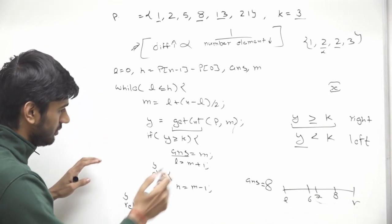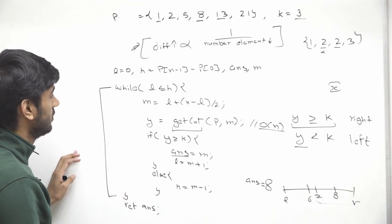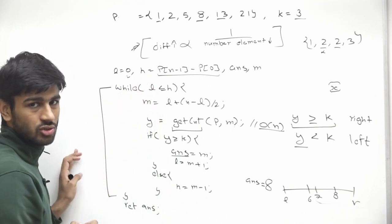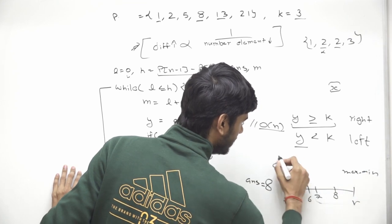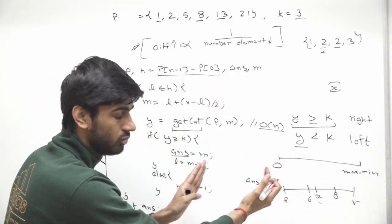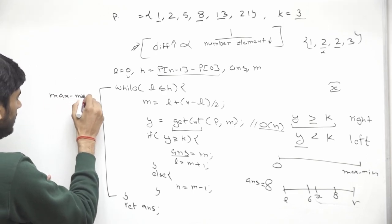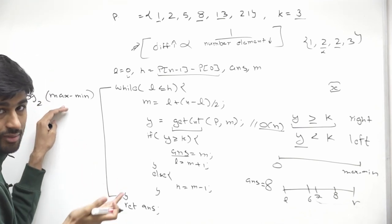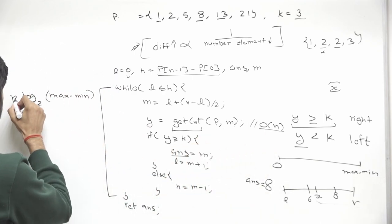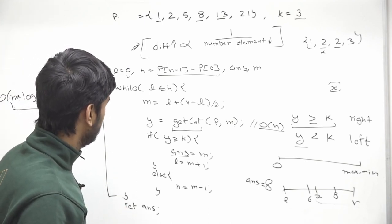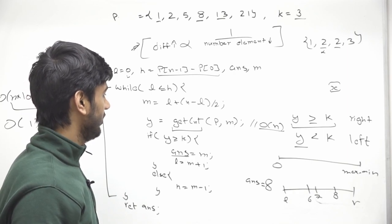For time and space complexity: the getCount function runs in O(n). Our search space ranges from 0 to max - min, and binary search divides this by 2 each iteration, giving O(log(max - min)) iterations. So the total time complexity is O(n * log(max - min)). Since we are not storing any extra data structures, the space complexity is O(1) — constant space.